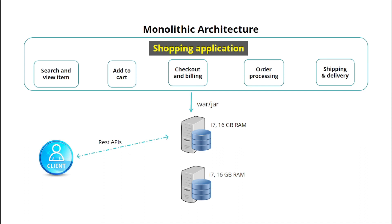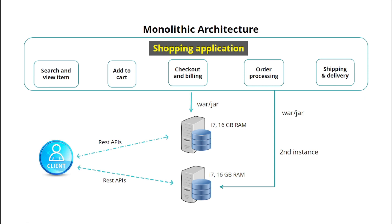Of course we can deploy another instance of the same code base to another server for load balancing, and then the client can use that via REST APIs. But here is the catch: whenever we want to deploy another instance, we have to deploy the whole application. In this shopping application, most of the load is on the Search and View Items feature. Users usually search and view items, and only sometimes go further to add to cart or purchase. So ideally only that feature should be deployed in multiple instances for load balancing, but in monolithic that is not possible.